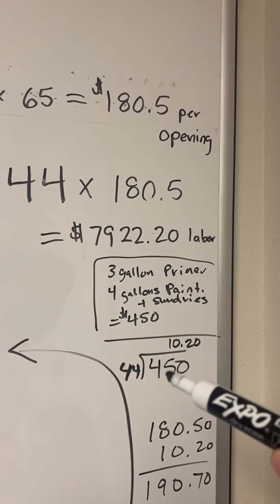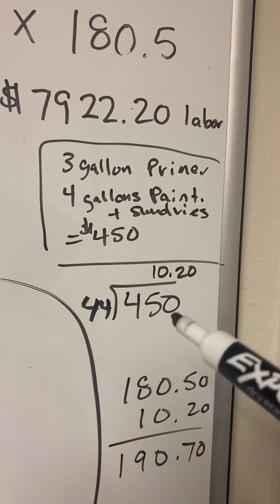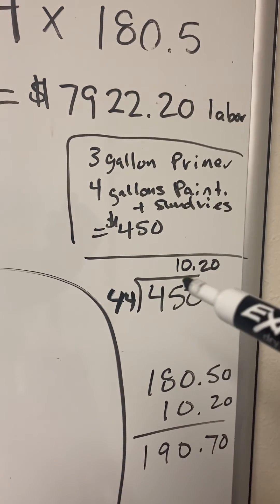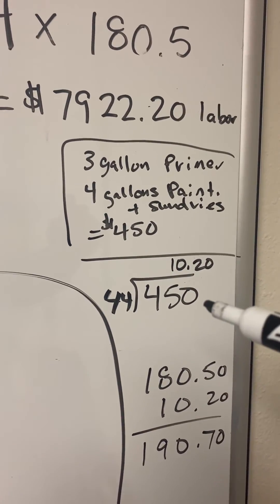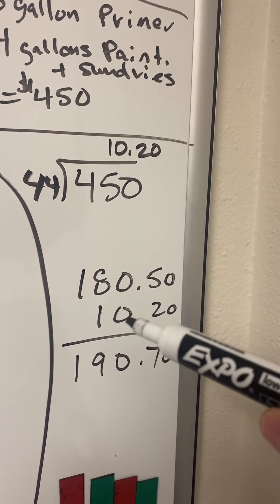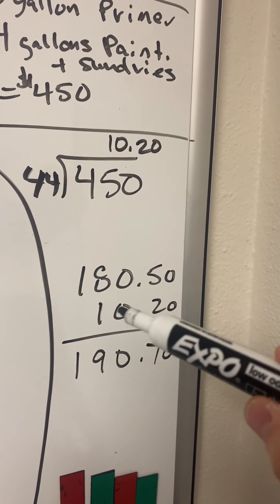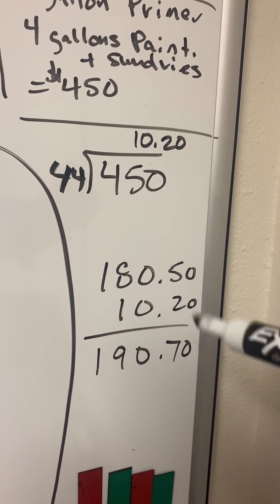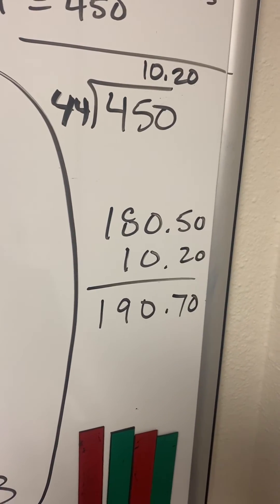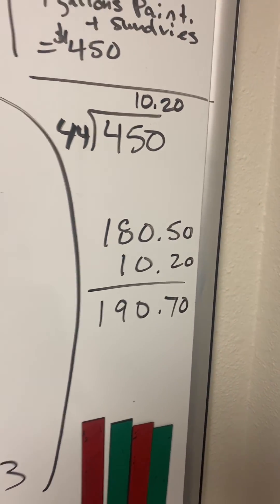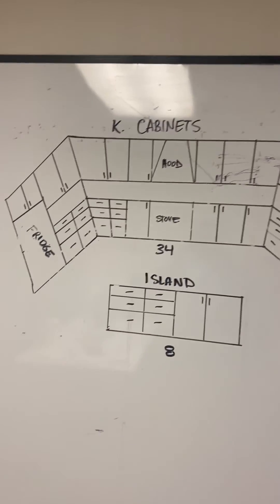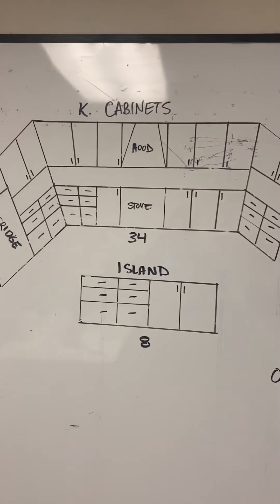We take our $450 materials cost and divide it by 44 pieces, which comes out to $10.20 per opening. Add that to the labor cost of $180.50 per opening, and now we have $190.70 per opening. Now we don't even need to calculate materials separately — with labor plus materials combined, we simply count up the pieces and multiply by $190.70 per opening.